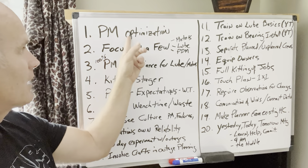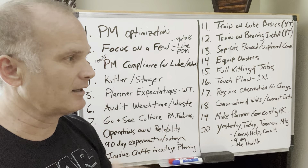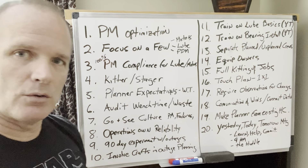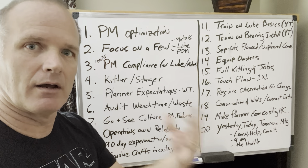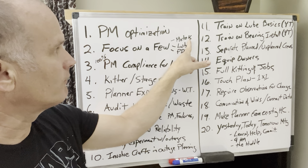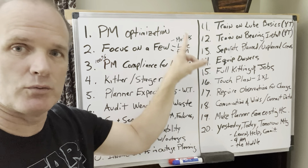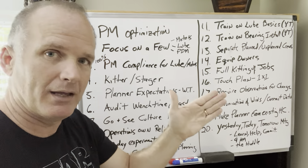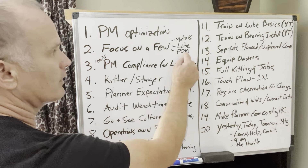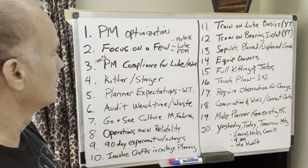Number two: focus on a few. I come into plants and they say here's the 60 things we're working on, and at the end of the year it's always one, two, or three things that kill the plant. Focus on things like motor PMs, or doing all of your lubes right and doing every PM on lube. Maybe it's predictive maintenance tools — free your people up to use your existing predictive maintenance tools.